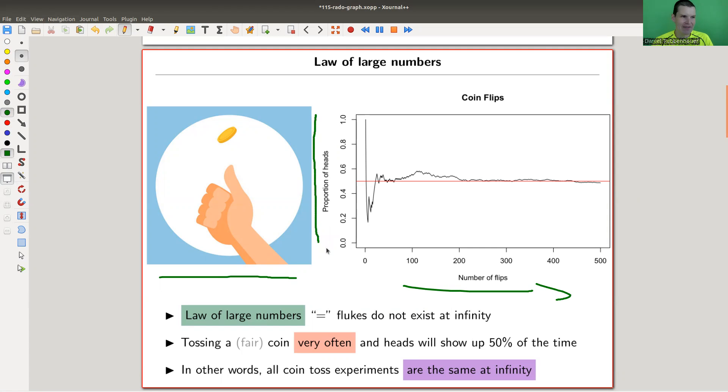Number of flips goes in this direction, and proportion of heads, so from 100% to 0% is on the y-axis, and it starts off a bit crazy as you can see, but eventually it kind of stabilizes quite nicely here. After 500 flips, essentially it is 0.5, as you would expect it.